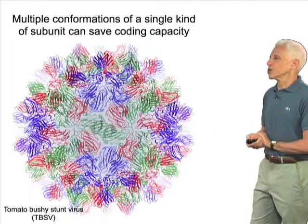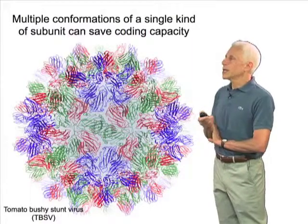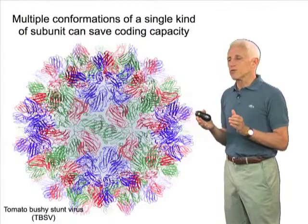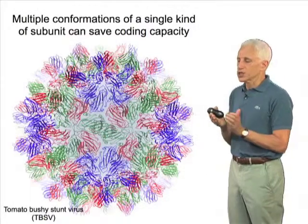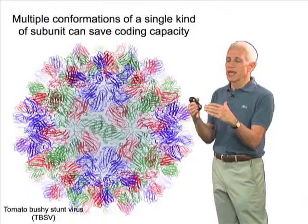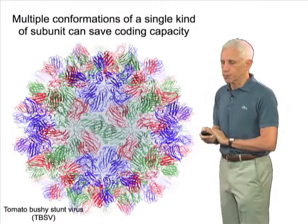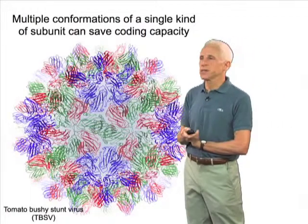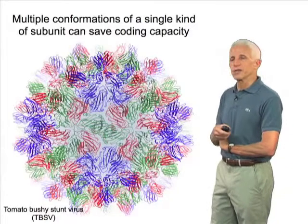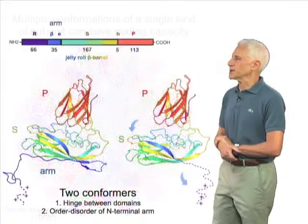This example, from a simple plant virus called tomato bushy stunt virus, shows that indeed one can make a very similar package with the jelly roll beta barrels packed essentially in the same orientation and the same packing style as in the picornaviruses, but where there's only one kind of subunit, and blue, red, and green correspond to three different conformations of that subunit.